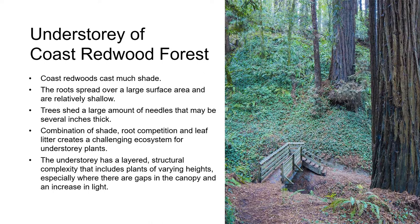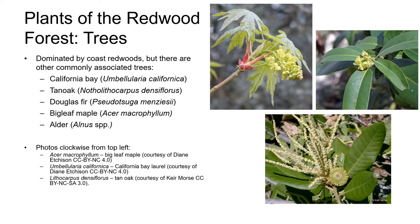In spite of this, there's a layered structural complexity to the understory that includes plants of varying types and sizes that exhibit a really interesting range of adaptations for surviving and reproducing in this shady environment. Coast Redwood Forest is obviously dominated by Coast Redwoods, both in quantity and sheer size, but there are also other smaller trees that are commonly found in this plant community.